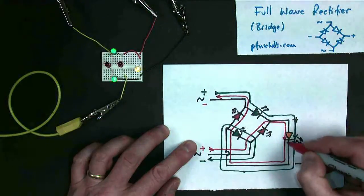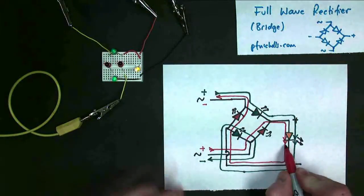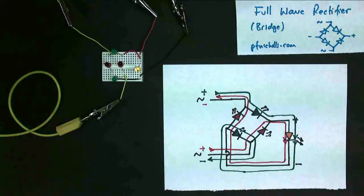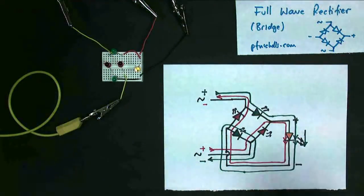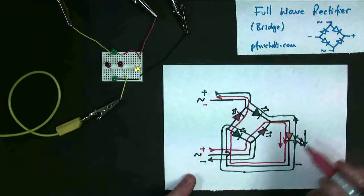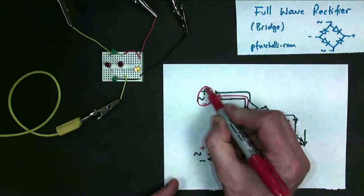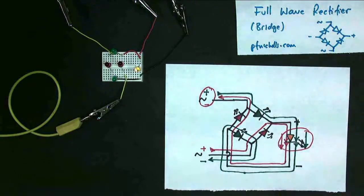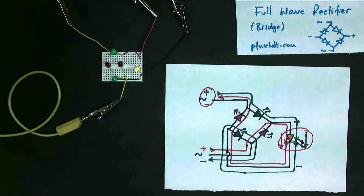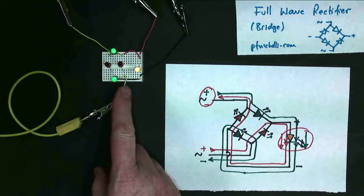But most importantly, whether it be the red current or the green current, they're both going in the same direction through the LED. So my AC, changing from positive to negative, has become DC, going all in the same direction. So that's how my bridge rectifier works, and this also makes a nice Christmas display.